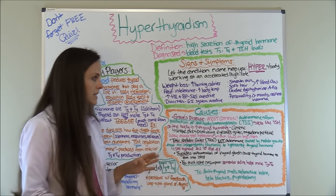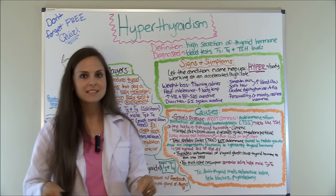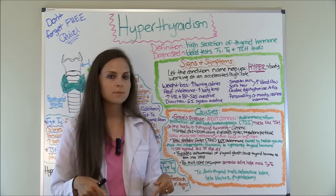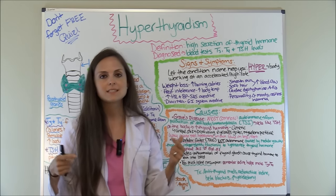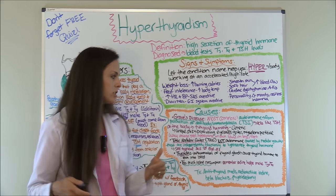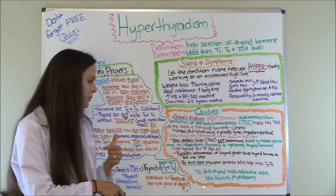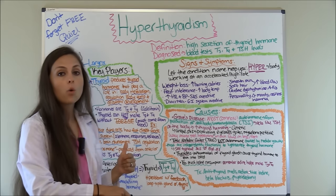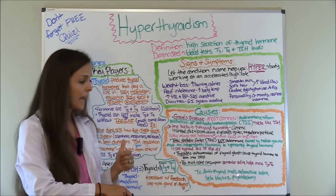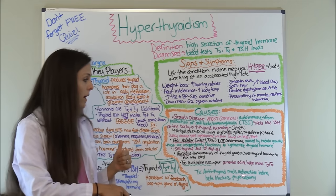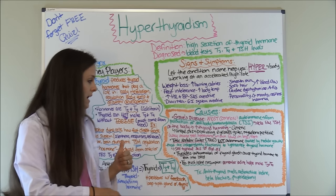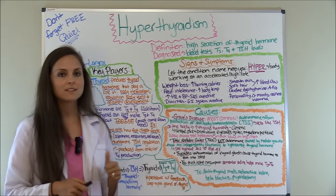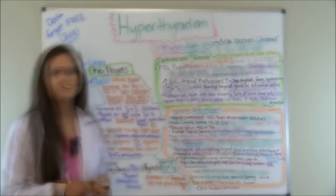Treatments for these conditions — which we'll go into depth on in a moment — include antithyroid medications, radioactive iodine, beta blockers, and thyroidectomy.